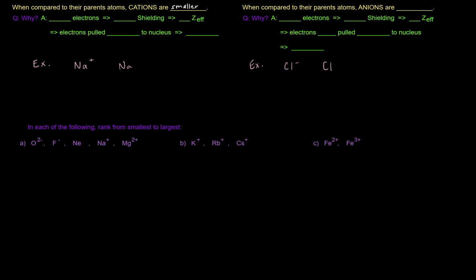Why is that? Well, if something is a cation, it's positively charged. It's positively charged because it lost an electron or lost electrons. So there are less electrons, okay, in a cation, then as compared to their parent atom, right? They lost electrons, so now they have less electrons. They have less electrons, that means there's less shielding, right?